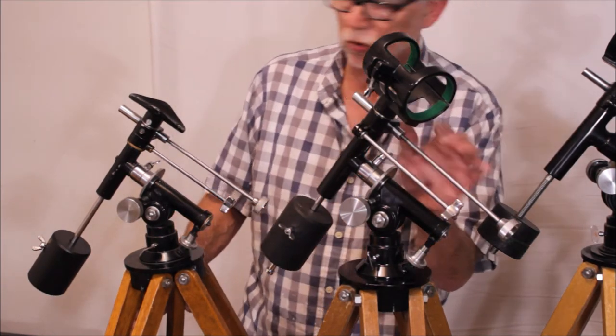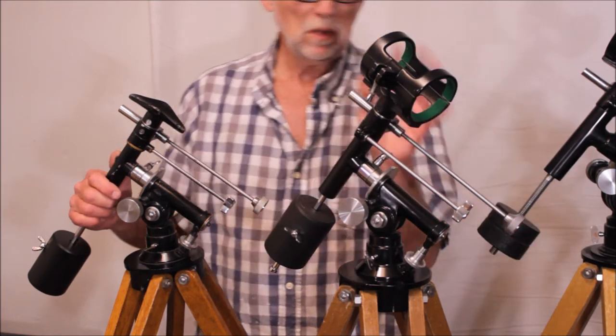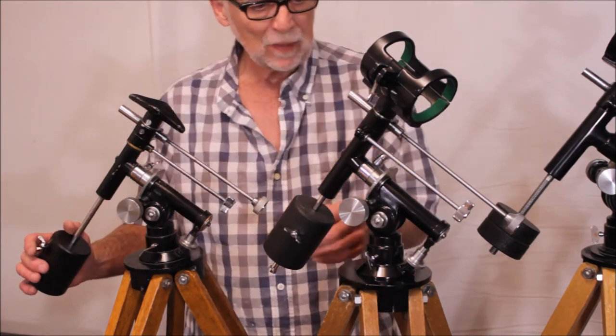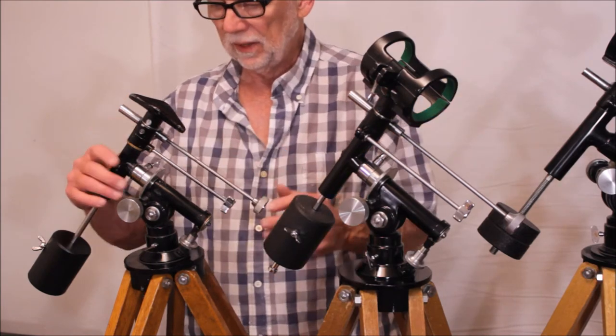The slow motion controls, we'll compare that. These are a fairly coarse thread, maybe 20 TPI. I would say it's about a quarter inch twenty or so. And we'll see later on they get to a finer thread on those.